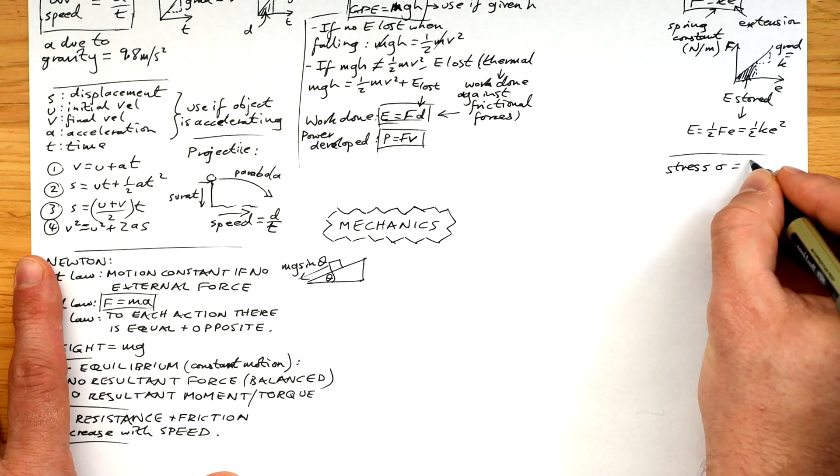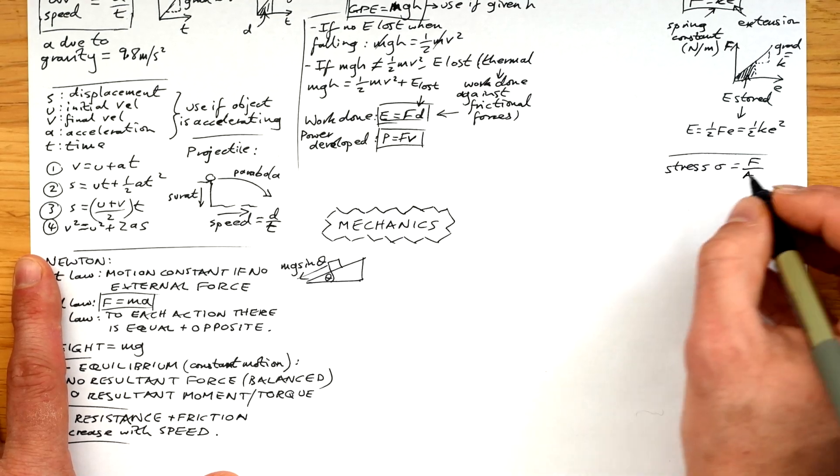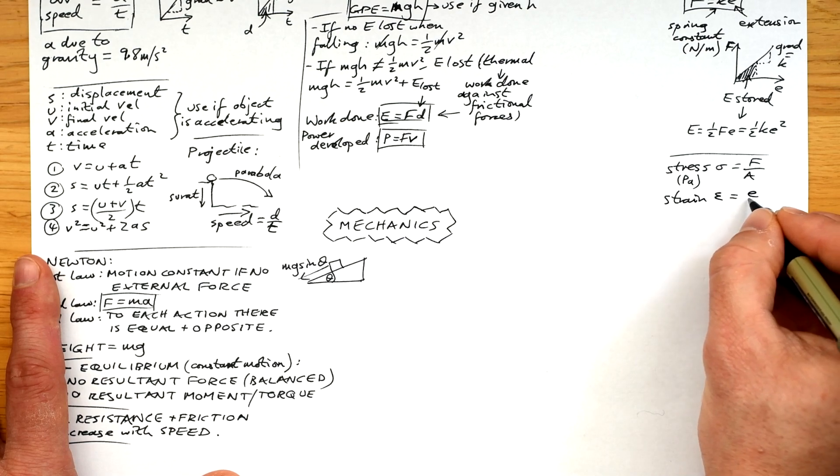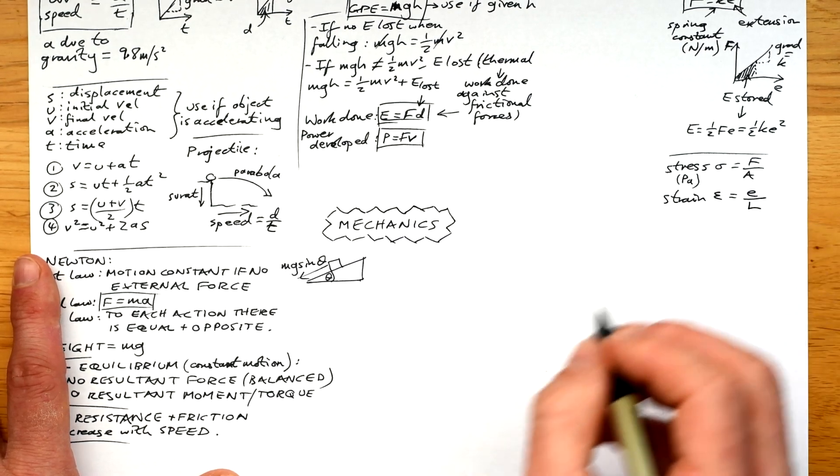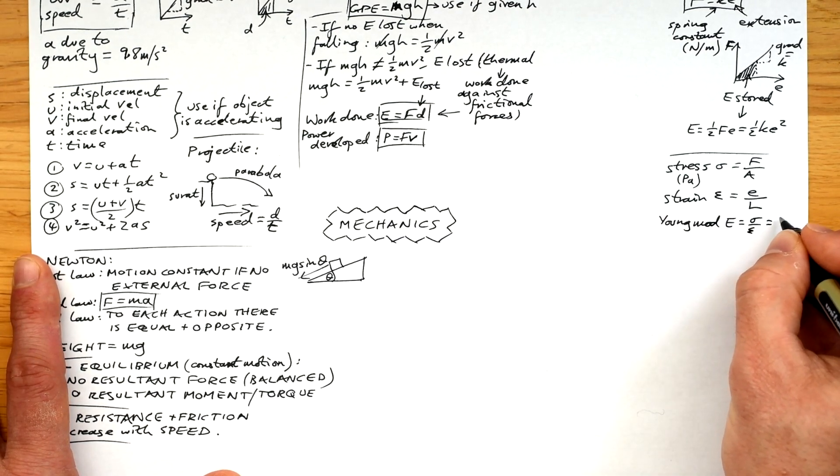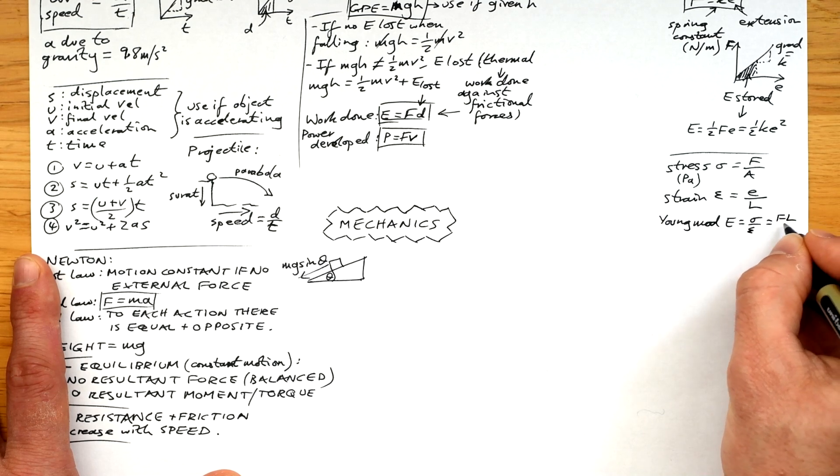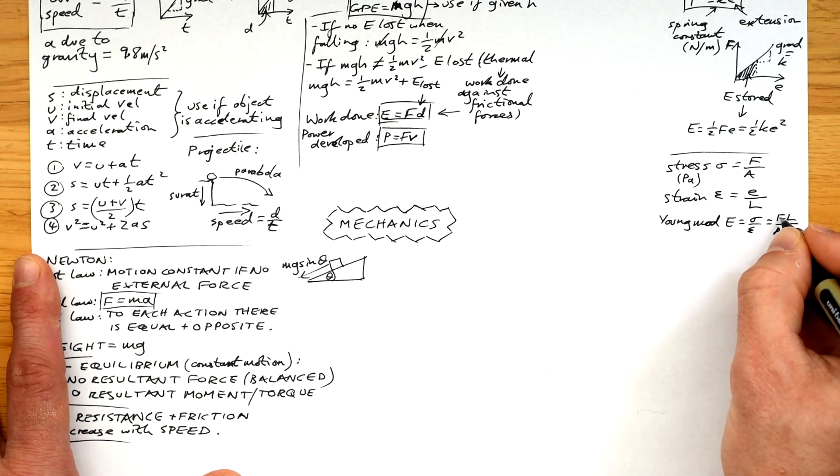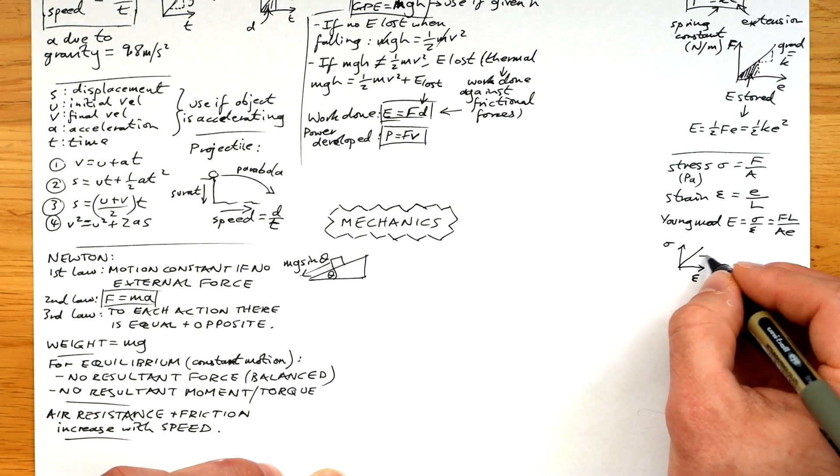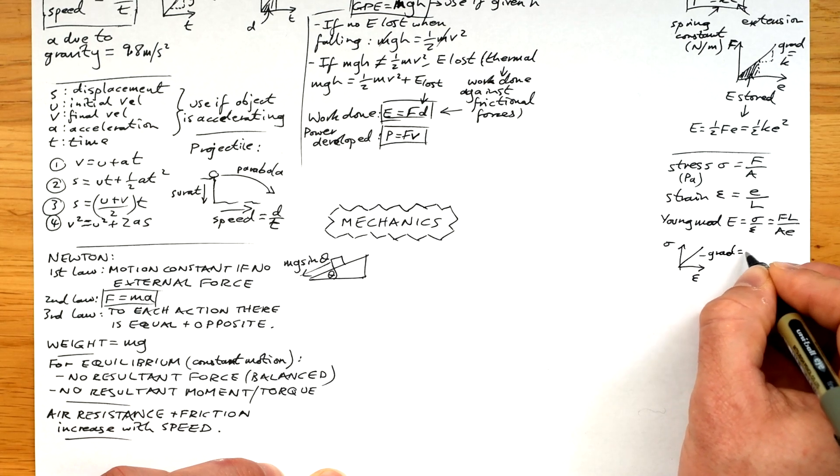Stress or tensile stress measured in pascals is equal to force divided by area. Strain is the ratio of extension to original length. The Young modulus is equal to stress over strain, so therefore the whole version is FL over AE. And if you draw a graph of stress against strain, then obviously our gradient is going to be equal to the Young modulus.